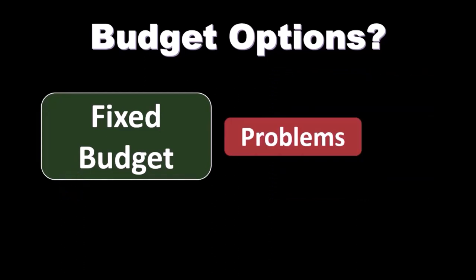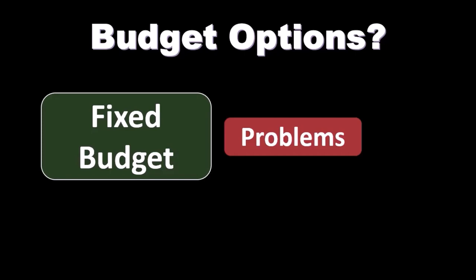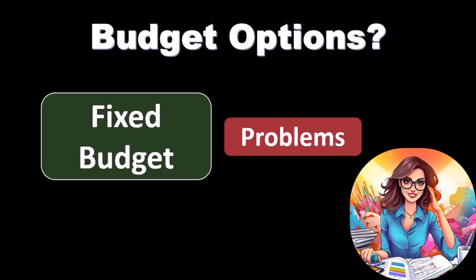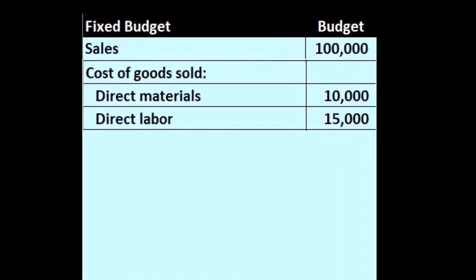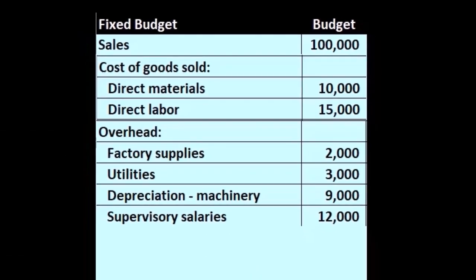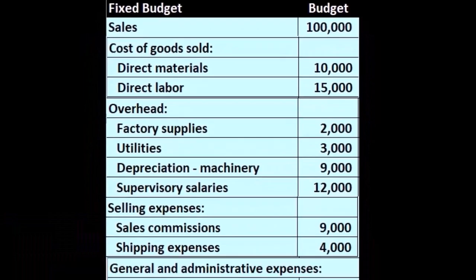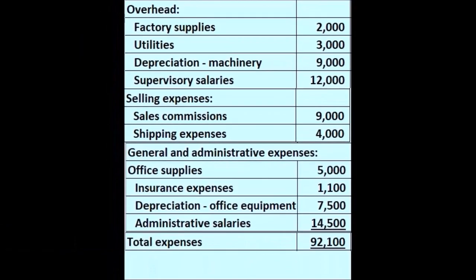Before we do so, let's take a look at the problems with a fixed budget — why might we need another option such as a flexible budget. With a fixed budget, the structure typically includes sales, cost of goods sold, and other income statement items. We're concentrating on the final result on the income statement — the timing type of account. So we have sales, cost of goods sold, overhead items, selling expenses, general and administrative expenses, giving us total expenses and finally income from operations.